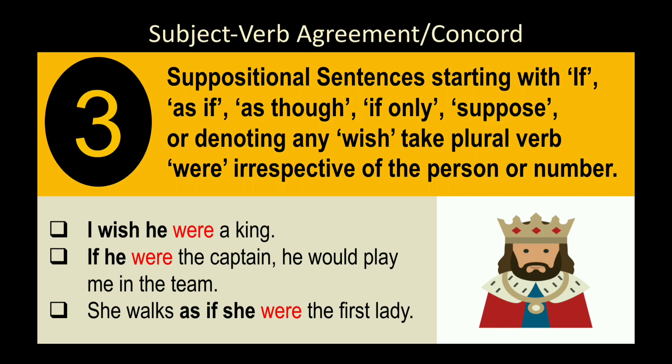Rule 3: In suppositional sentences starting with 'if,' 'as if,' 'as though,' or 'if only' — which denote a wish or supposition — we use 'were' even with singular subjects. For example, 'I wish he were a king' (not 'was'). 'If he were the captain, he would play me in the team' — he is not actually the captain, this is just my supposition.